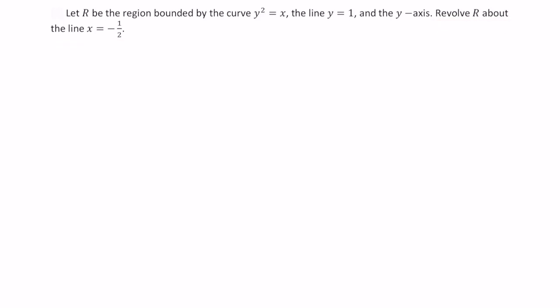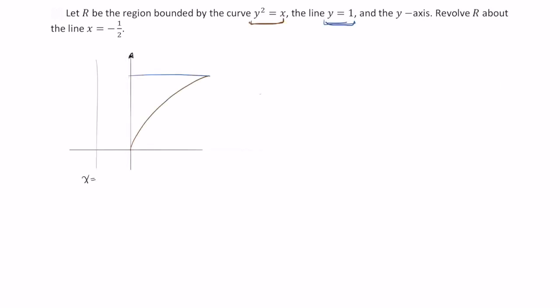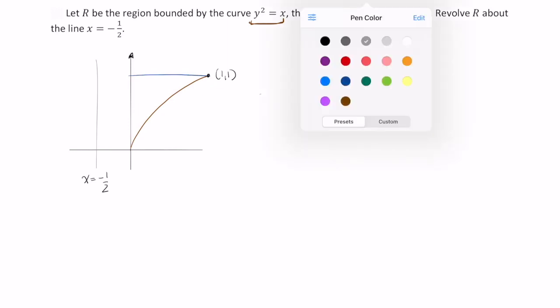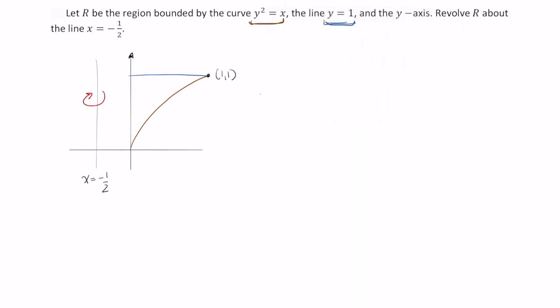The best way to begin is with a sketch. So there is my sketch of the region, and the region in particular is this interior portion here. And we'll be rotating that about the line x equals negative 1 half. It would absolutely help to have a three-dimensional sketch of this.